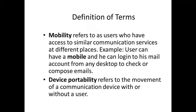Another example: if someone is able to work on a document from the office using their personal computer or workstation, then access the same document in transit heading home — whether commuting by train, car, or other means — using a mobile device, and also access the same document at home using a laptop, then that is mobility.